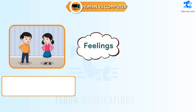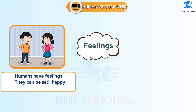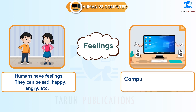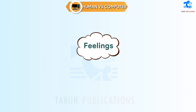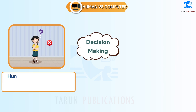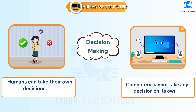Feelings: Humans have feelings — they can be sad, happy, angry, etc. Computers do not have any feelings. Decision Making: Humans can take their own decisions, but computers cannot take any decision on their own.